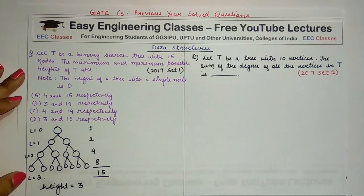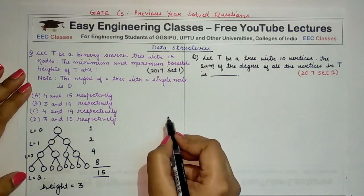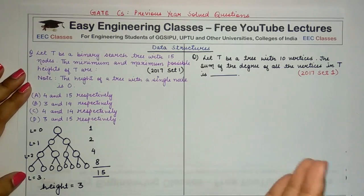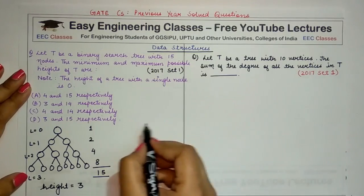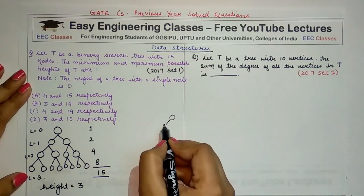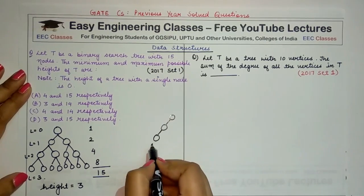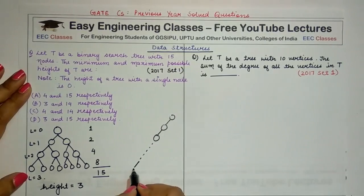Or a tree that has all the nodes either present as the left child, or all the nodes present as the right child. Like you can draw a tree like this and so on till the last node, the 15th node.